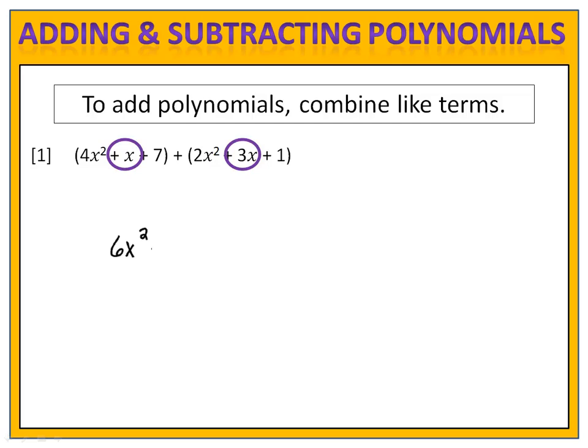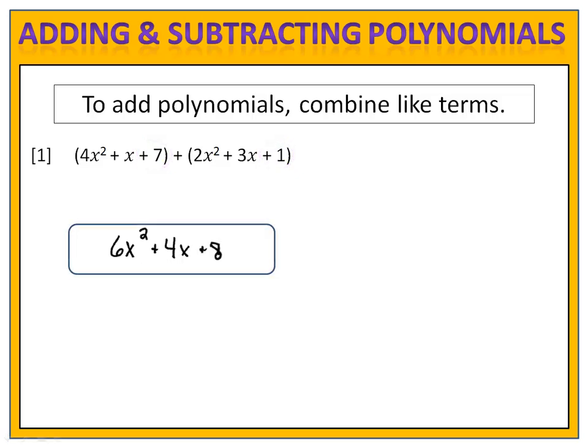Next we have plus 1x and plus 3x. 1x and 3x gives me a total of 4x's, so I have plus 4x. Finally, we see the constant terms — they're called the constant terms because they have no variables. 7 plus 1 gives us 8. And so the sum of these two polynomials is 6x squared plus 4x plus 8.